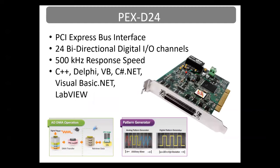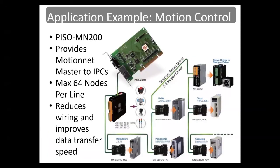Our PEX-D24 has a PCI Express bus interface and 24 bidirectional digital I/O channels. It comes with demo programs in Turbo C++, Borland C++, and the other languages mentioned. Our MotionNet boards can connect over the PCI bus. The PISOMM200 is a PCI Master Card with two MotionNet serial communication lines for distributed motion and I/O control in machine automation applications. You can connect up to 128 slave modules, and if one MotionNet line is used for I/O control, it can send and receive signals to and from 2,048 points on 64 local devices within 0.97 milliseconds.